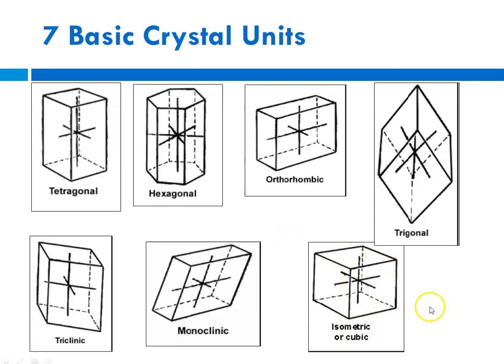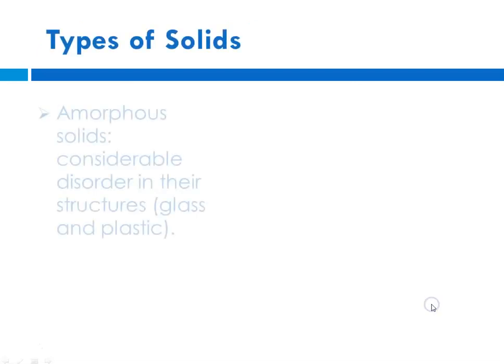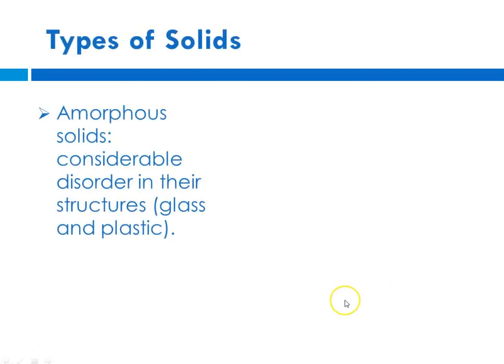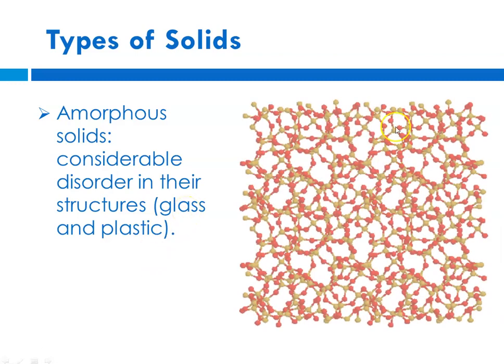The other type of solid that we talk about are amorphous solids. These have considerable amount of disorder in their structures. When we think about amorphous solids, we think about glass and we think about plastics. As you can see here, there's quite a bit of disorganization in the structure. Where crystalline solids have very definite melting points, amorphous solids, because there's so much randomness, they are still just vibrating around the particles. But when they are heated, they eventually just kind of flow.